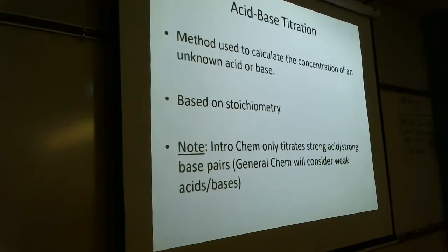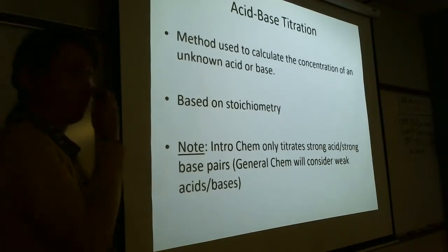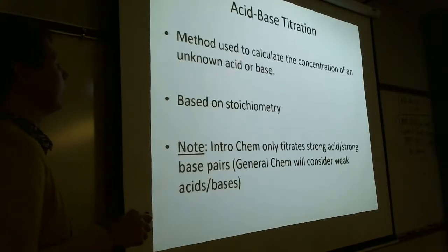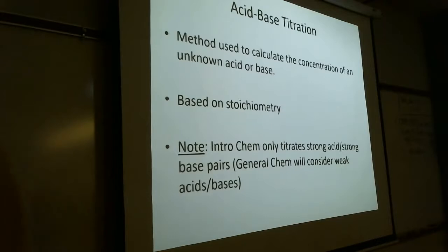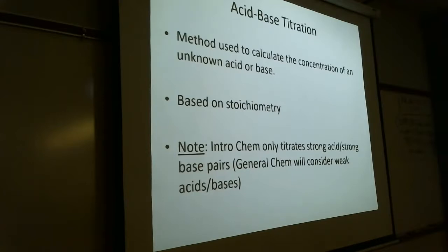Now let's talk about titrations. A titration is a method we use to figure out the concentration of an acid or base of unknown concentration. If we don't know the concentration, we can titrate to work backwards and figure out what the unknown concentration is. This is based on stoichiometry. In intro chem we only look at strong acids and strong bases — the calculation is slightly different for weak acids, which is covered in general chem.